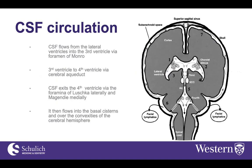In terms of how CSF is circulated within the ventricular system, it's important to understand the anatomy because it relates to the pathophysiology behind many cases of hydrocephalus. From the lateral ventricles, CSF flows into the third ventricle via the foramen of Monroe, then into the fourth ventricle through the cerebral aqueduct — a very narrow structure that's often obstructed and can lead to hydrocephalus.